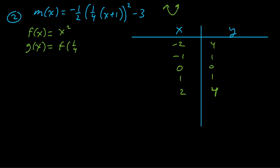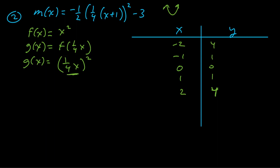Using composition of functions, define g(x) = f(¼x). We replace x with ¼x, so g(x) = (¼x)². Since ¼ is grouped with x, it affects the x coordinates with the reciprocal effect — a horizontal stretch by a factor of four. We multiply the x coordinates by four, giving -8, -4, 0, 4, and 8.